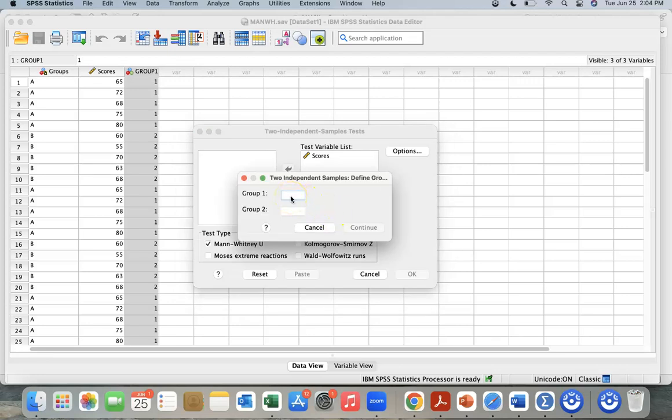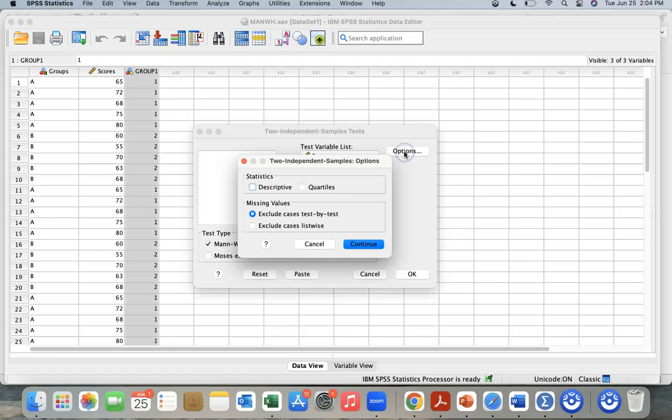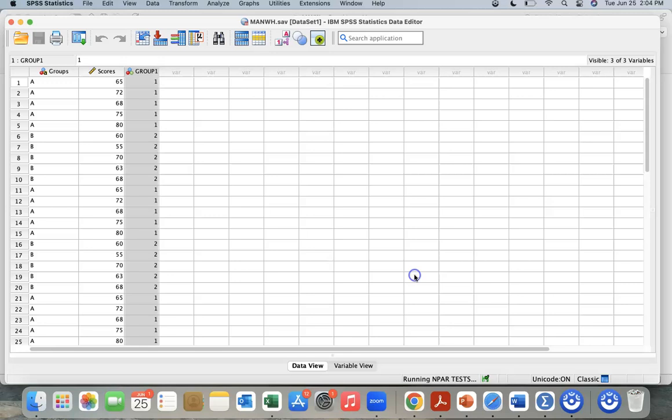As we said before, A is one, and B is two, and we can hit continue. We have our Mann-Whitney test type, and let's look at options. We can look at quartiles. I don't normally use that, but I can hit continue, and then I can hit okay.